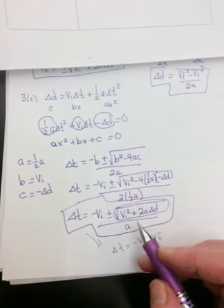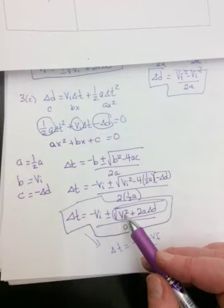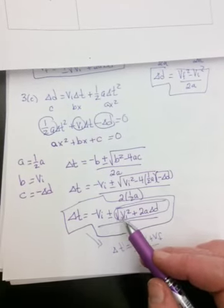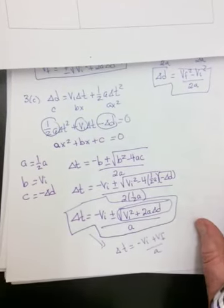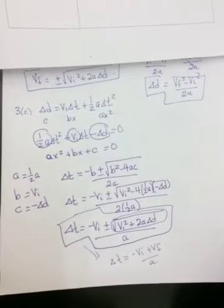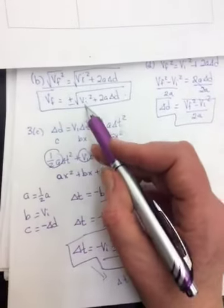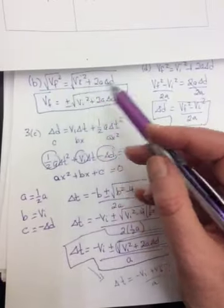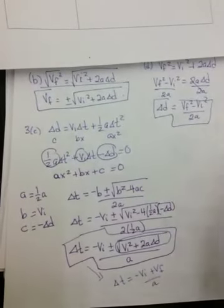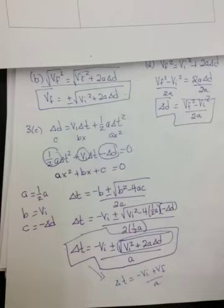And right at the end of the video, what I was trying to show you was it really isn't that nasty, because if you look at this plus or minus the square root of VI squared plus 2A delta D, that's really just VF. So this whole thing could be replaced by VF.